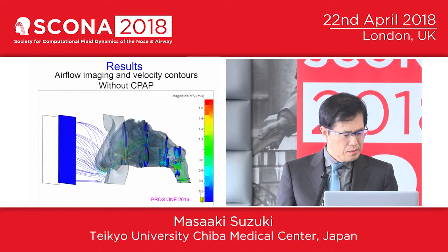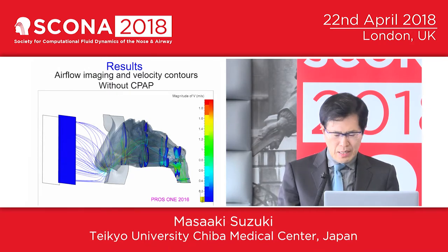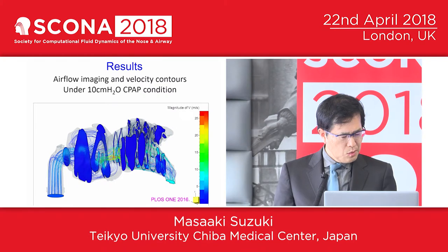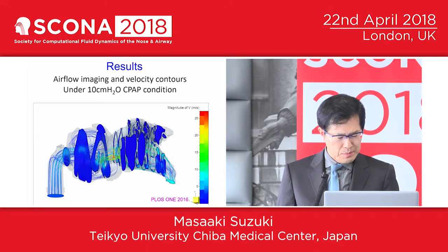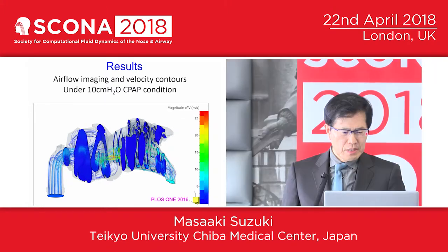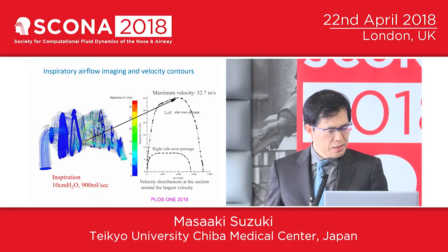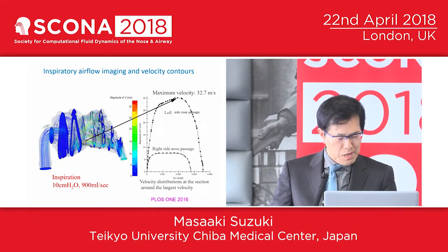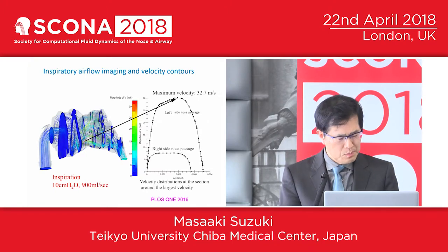This slide shows the airflow imaging and the velocity contours in the nasal cavities and nasopharynx without CPAP, and those under 10 cm water CPAP condition, including an image of a CPAP mask that fits over the nostrils. We can see turbulence in the CPAP mask. In the close-up view, when the condition is under 10 cm water, the airflow during inspiration became a rapid stream as high as 32.7 meters per second.